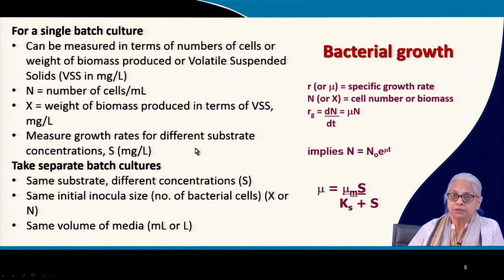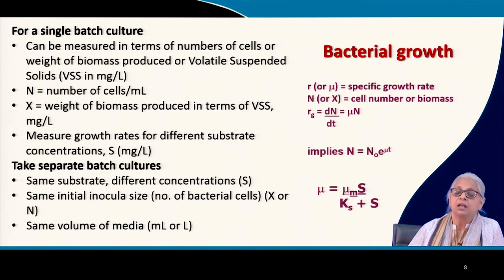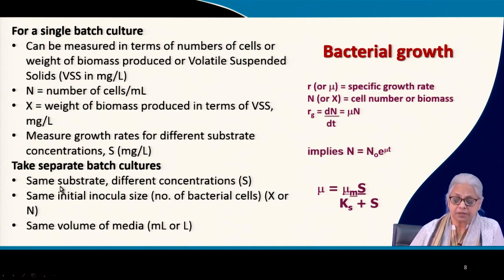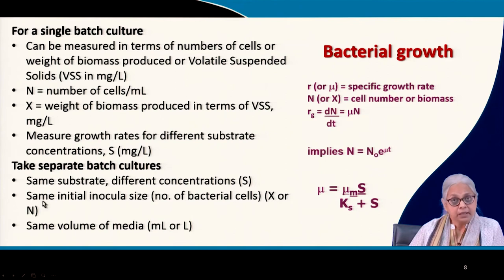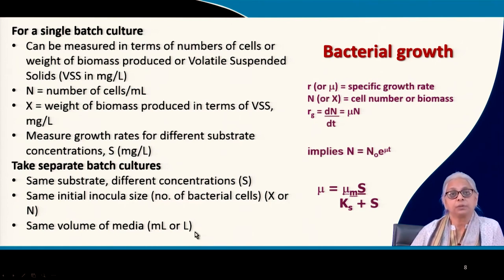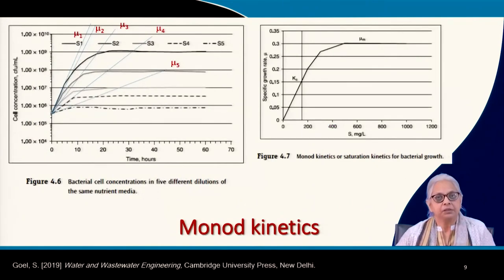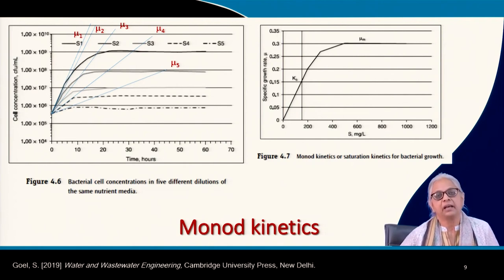To measure growth rates and derive Monod kinetics, a single batch culture is not sufficient. What you need is the same growth-limiting substrate at different concentrations. You run a series of experiments with different substrate concentrations, the same initial inoculum size, the same incubation period and conditions, and the same media volume — everything the same except the substrate concentration.